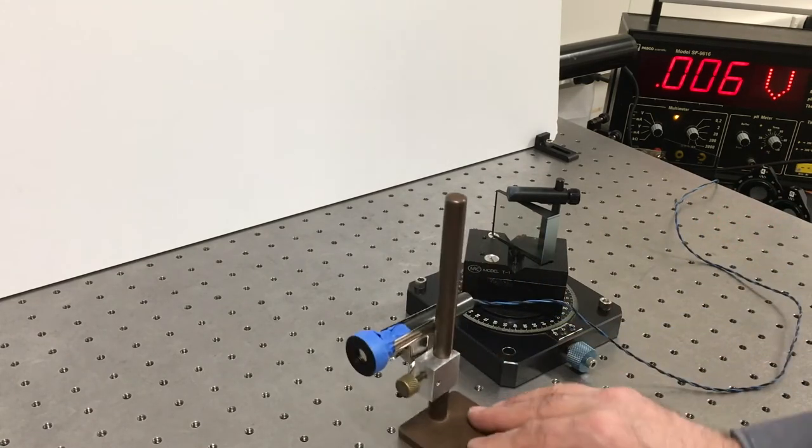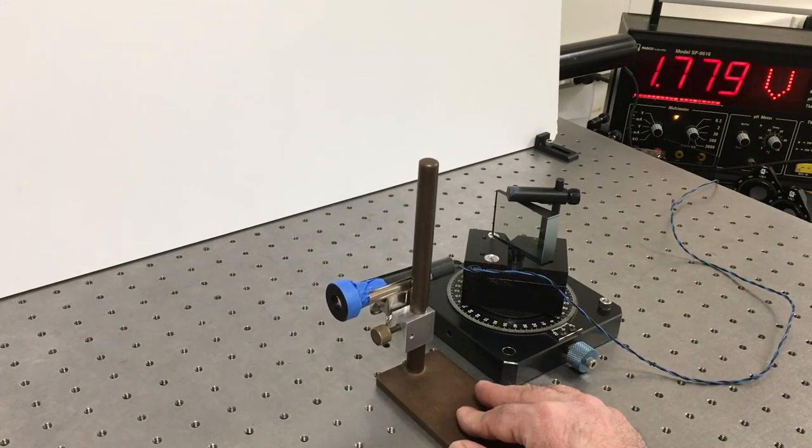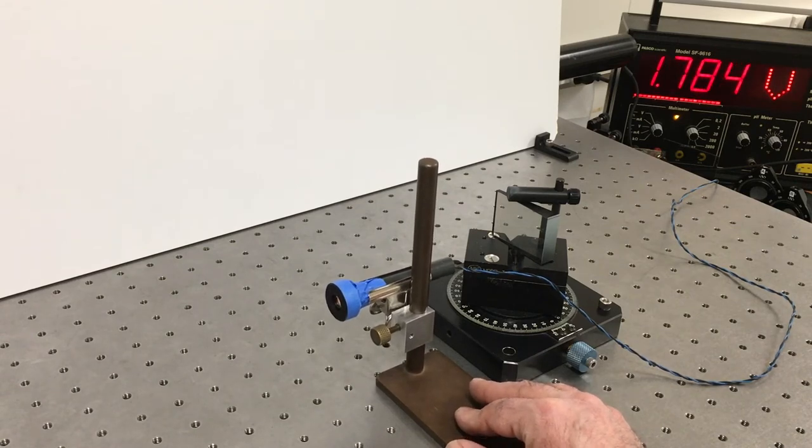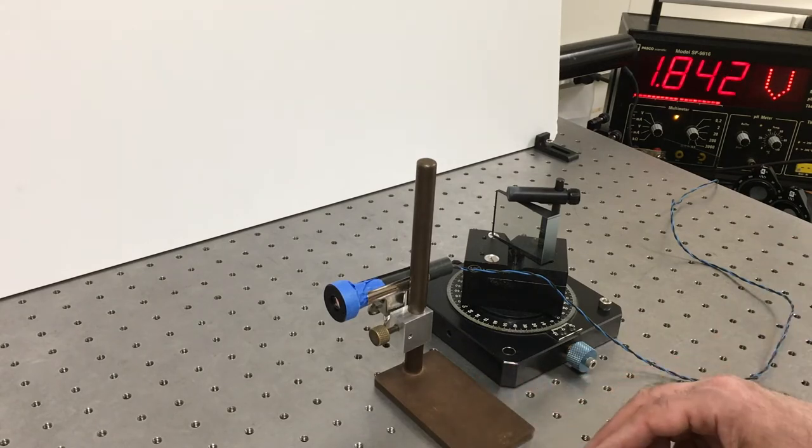So we're going to start by measuring the total incident radiation, total incident light hitting our cell, and we max out at about 1.8 volts. Right there, okay, so there's our incident reading.